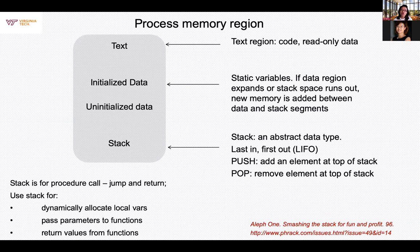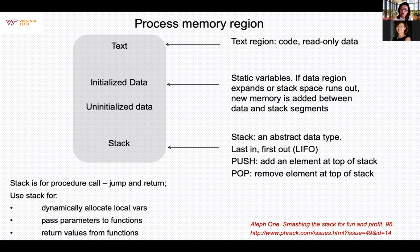Let's go back to the stack. A little bit of background on process memory: for a program to run, the operating system needs some space. It needs its instructions — that's the text region, or code region, which is read-only and has all the instructions laid out. It has a space for data: if it's an array, that's initialized data; if it's something like a linked list using malloc, that's uninitialized data.